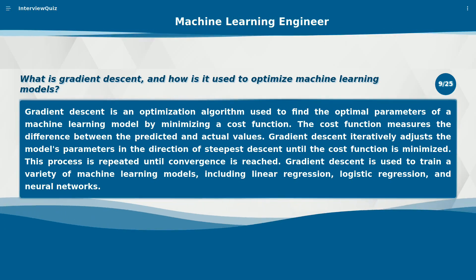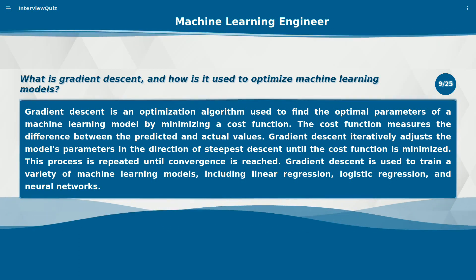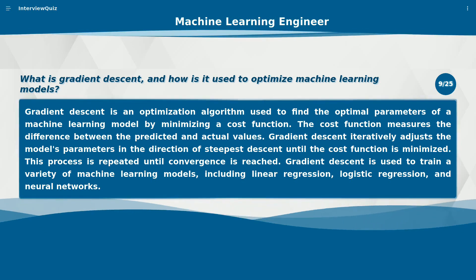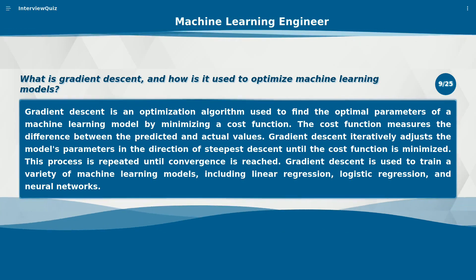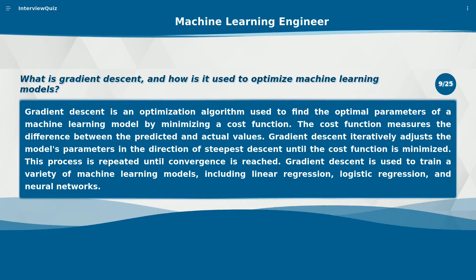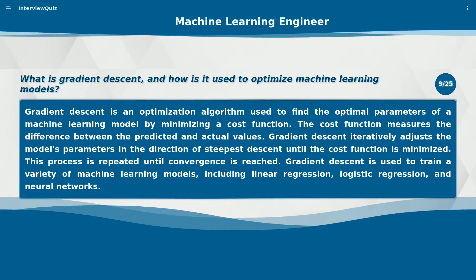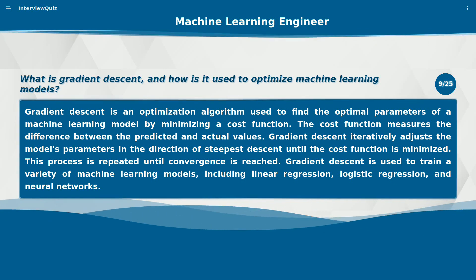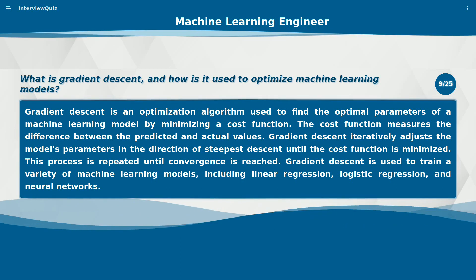What is gradient descent, and how is it used to optimize machine learning models? Gradient descent is an optimization algorithm used to find the optimal parameters of a machine learning model by minimizing a cost function. The cost function measures the difference between the predicted and actual values. Gradient descent iteratively adjusts the model's parameters in the direction of steepest descent until the cost function is minimized. This process is repeated until convergence is reached. Gradient descent is used to train a variety of machine learning models, including linear regression, logistic regression, and neural networks.